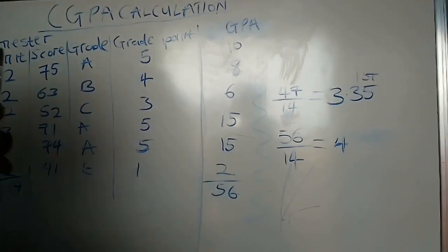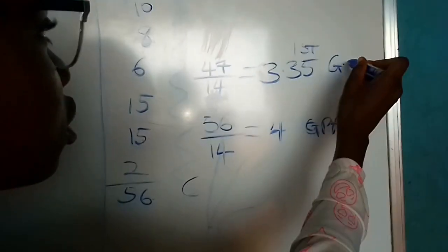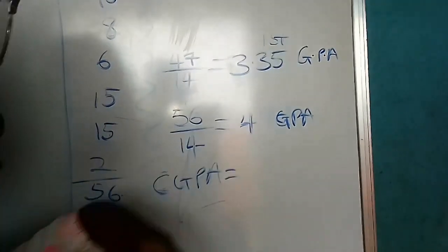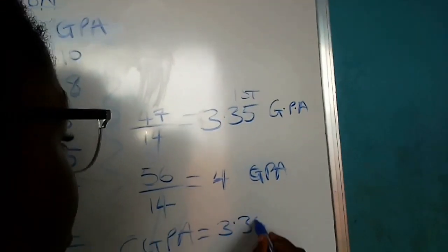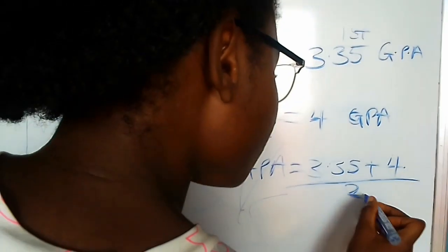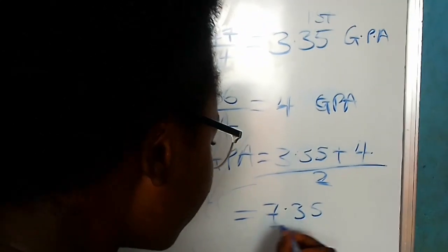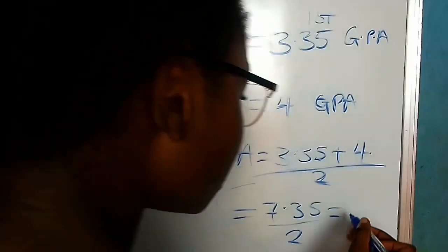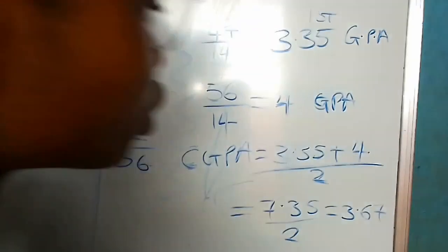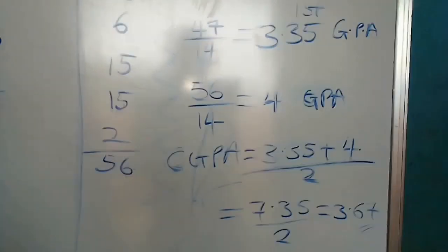To calculate the overall CGPA, we take the two GPAs — 3.35 from first semester and 4.00 from second semester — and add them together: 3.35 plus 4 equals 7.35, then divide by 2, which gives us 3.675. So this person's CGPA for the year is 3.67.